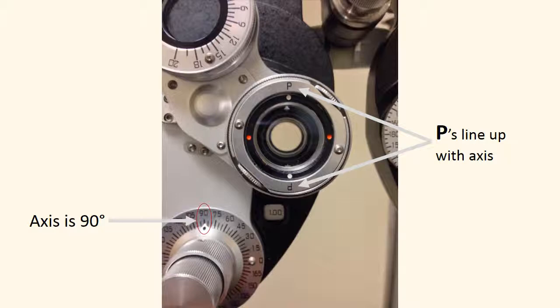If your axis has shifted once you've refined it, then your P's will not line up at 90 degrees. You will line them up according to your new axis. That's why we refine the axis first, so we know where to line up the P's when we begin to refine the cylinder power.